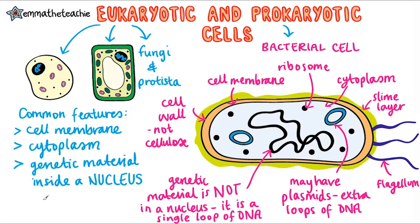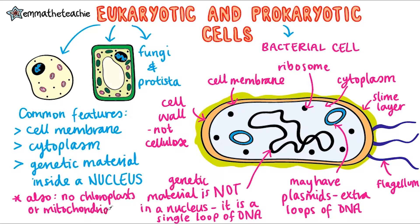It's important to learn the differences between eukaryotic and prokaryotic cells. Notice that prokaryotic cells also don't have any chloroplasts or mitochondria, as they're just so small that these can't fit inside them.